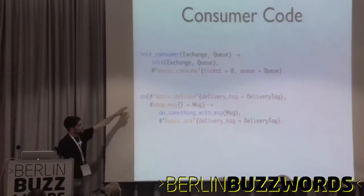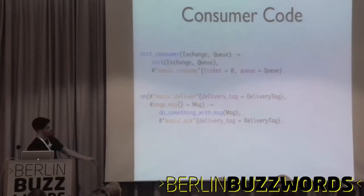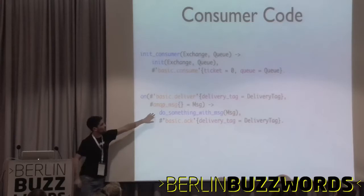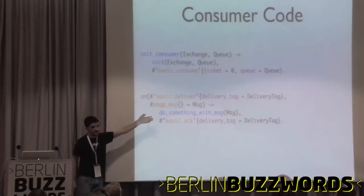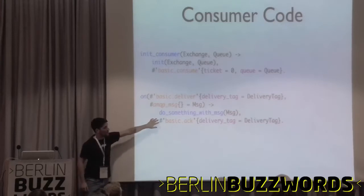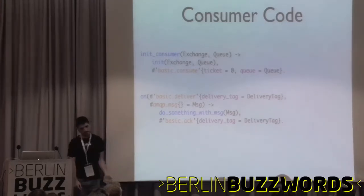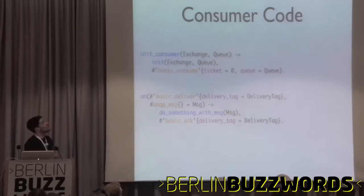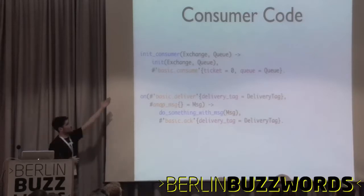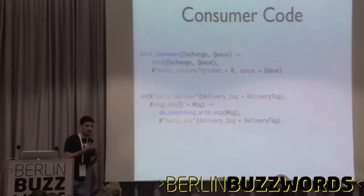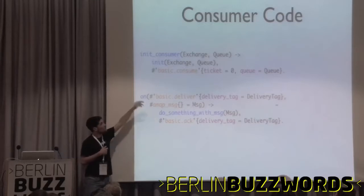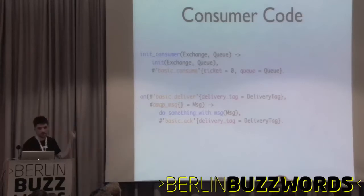When we get a message from the server — a basic deliver command — the server sends a delivery tag, which we can use later for acknowledging the message. After we do something with the message — process picture, send Twitter, whatever — we acknowledge the server that we processed it, so the server removes the message from the queue. On basic consume we can say 'no acknowledge,' which speeds up messaging a lot, because as soon as the message is sent to our consumer, the server deletes the message and continues sending more.